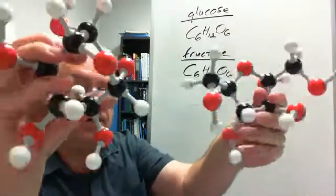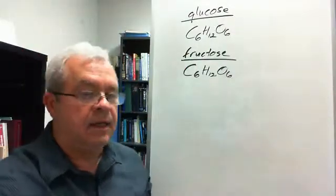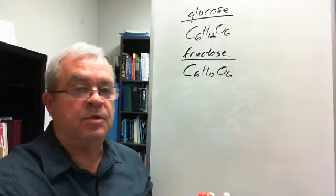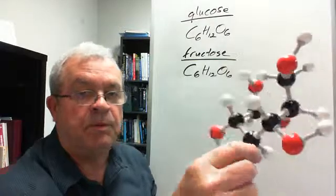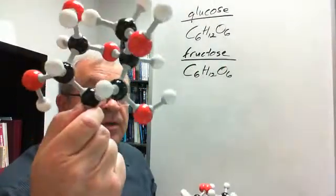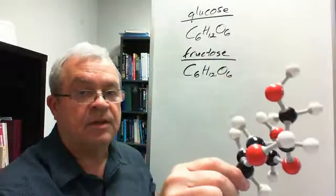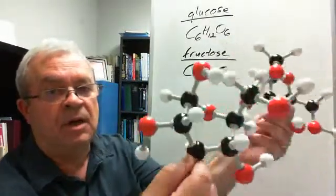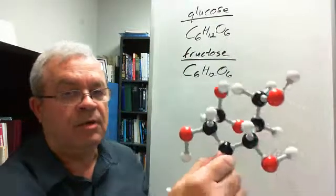And so what's the difference between this one and this one? How can two different things have exactly the same chemical formula? Well, do you suppose it's possible to take exactly the same number of atoms, same kinds of atoms, same number of atoms, and hook them together different ways? Yes, that is in fact the case.